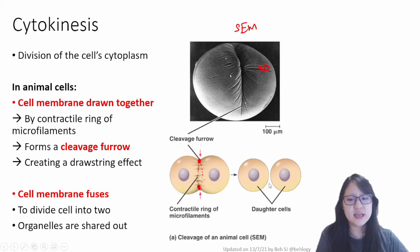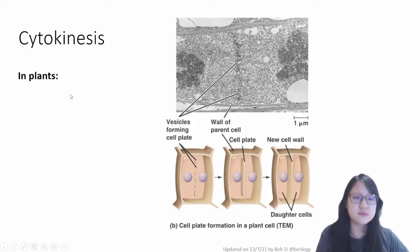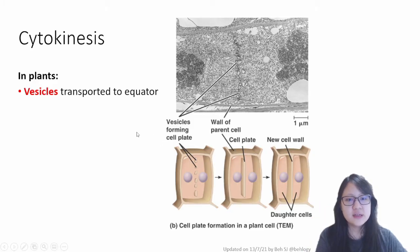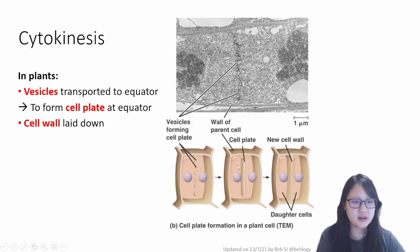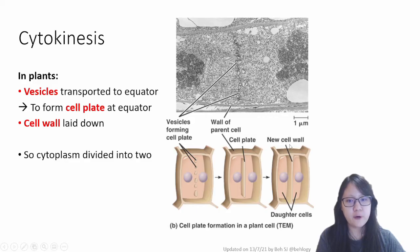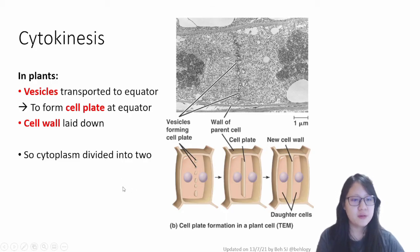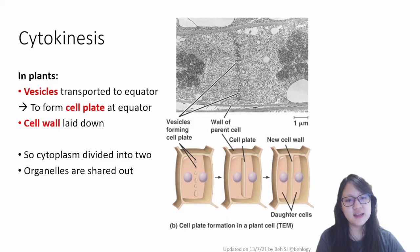This becomes more complicated in plant cells, because plant cells have a cell wall and cannot form a cleavage furrow. Instead, in plant cells, vesicles are transported to the equator forming the cell plate. Many of them fuse together to form the cell plate, which eventually forms the new cell wall, dividing the cytoplasm into two. So no cleavage furrow, no contractile ring — just vesicles, cell plate, and cell wall. And the organelles are distributed, giving you two new cells.